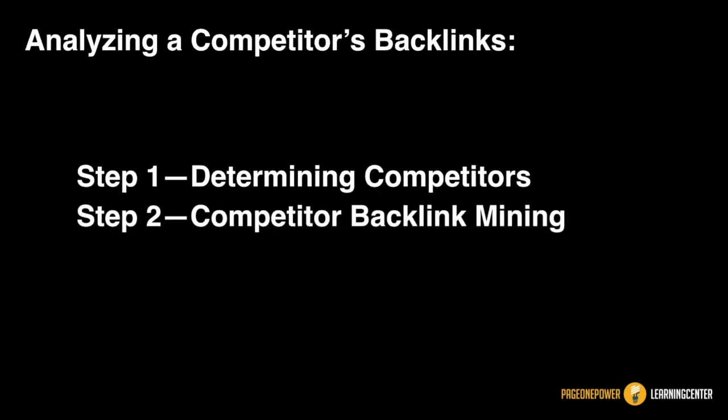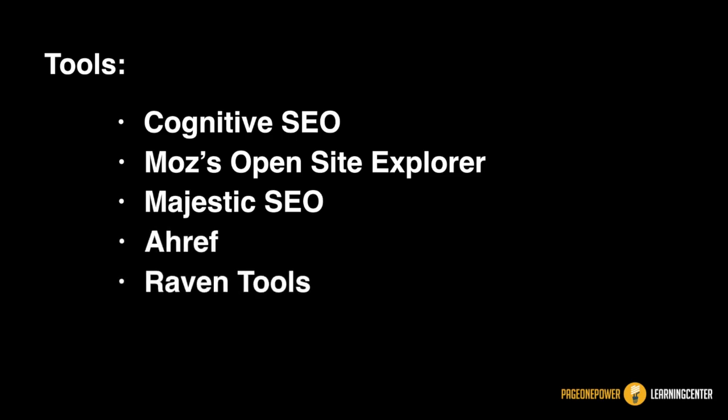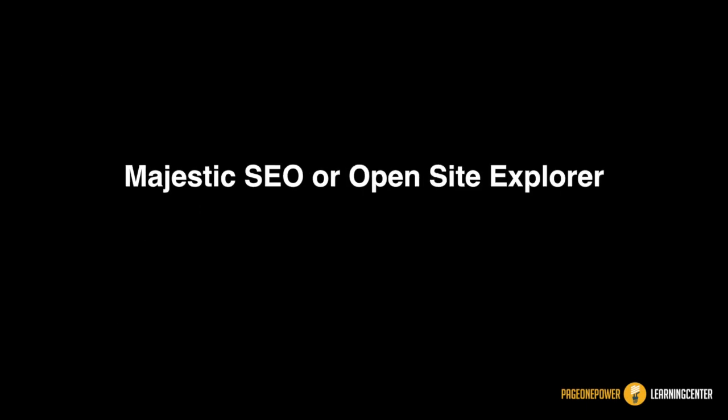Step 2: Competitor Backlink Mining. Once you have a suitable list of competitors, it's time to pull their backlink profile. There's a variety of tools capable of this, including Cognitive SEO, Moz's OpenSite Explorer, Majestic SEO, Ahrefs, Raven Tools, and SEO Spyglass from Link Assistant. Use the software you're most comfortable with. The more data you can grab, the better. We often use Majestic SEO or OpenSite Explorer to make sure we have a diverse set of backlinks.